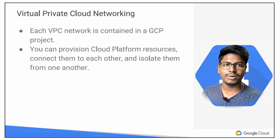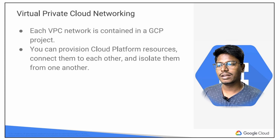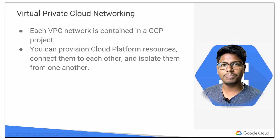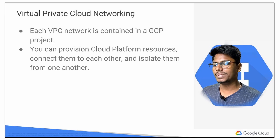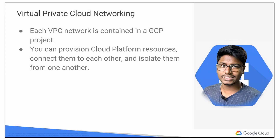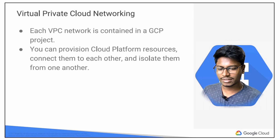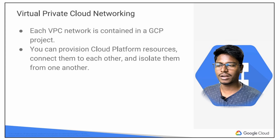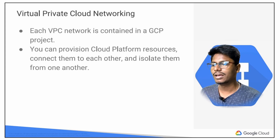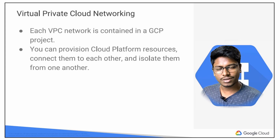If you have two different VPCs interconnected — if you say VPC peering — you can connect them. If you have a particular VM, you can isolate it. If you allow a particular thing, you can configure the firewall rules.